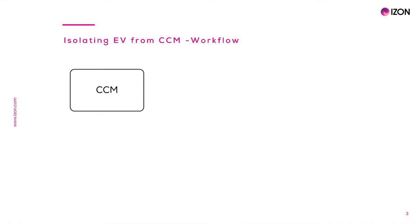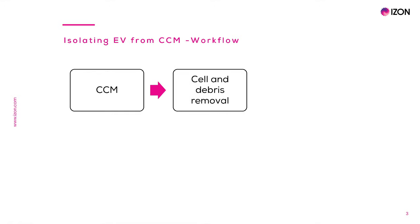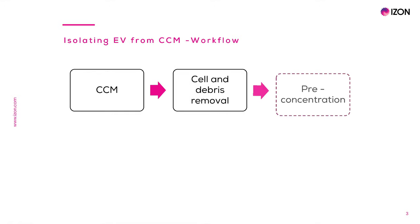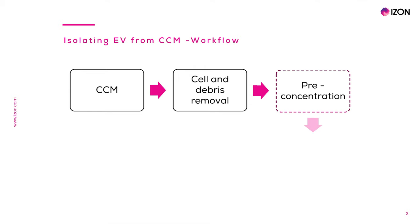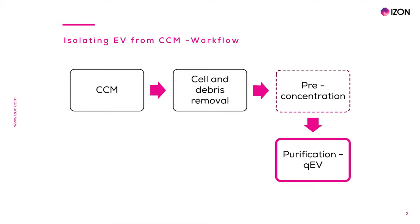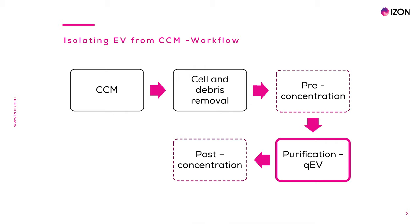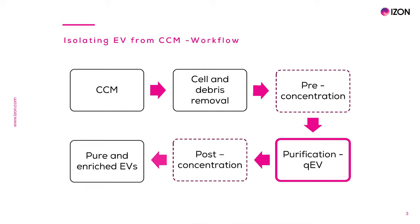Here is a basic workflow of how to process CCM for EV isolation. First, you start with an amount of CCM volume retrieved from culturing your cells. Then cells and debris are removed, followed by an optional pre-concentration step, then the core EV isolation procedure, and then another optional post-concentration step to obtain a preparation of pure and enriched EVs, which can be used for any downstream application.